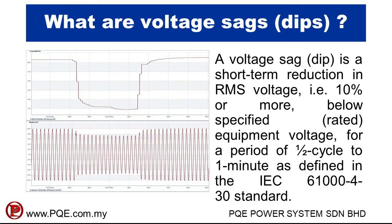What are voltage dips? A voltage dip is a short-term reduction in RMS voltage — i.e., 10% or more — below the specified rated equipment voltage, for a period of half a cycle to one minute.